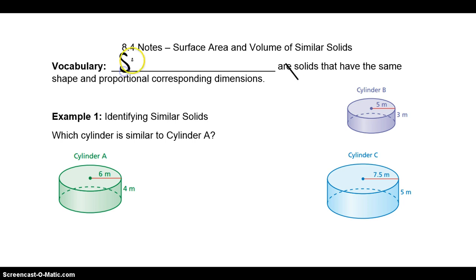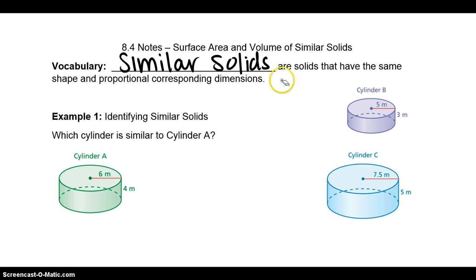Our vocab word is a similar solid. Similar solids are solids that have the same shape and proportional corresponding dimensions. The corresponding to the radius is obviously the radius, and the corresponding to the height is the height.